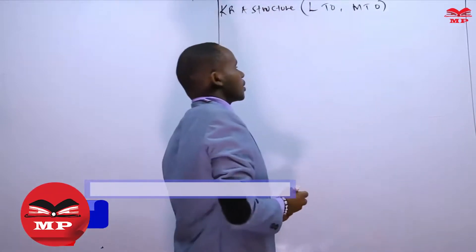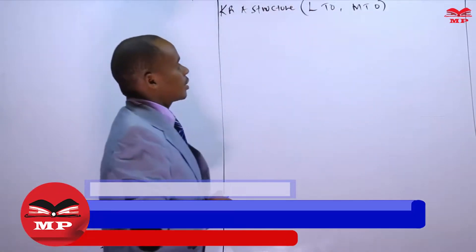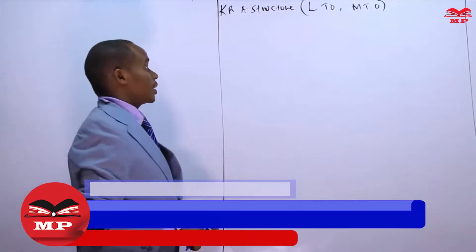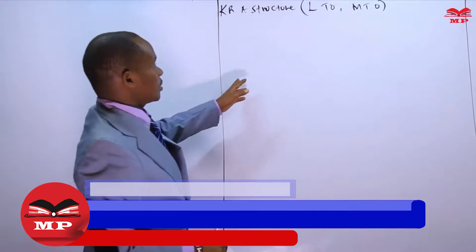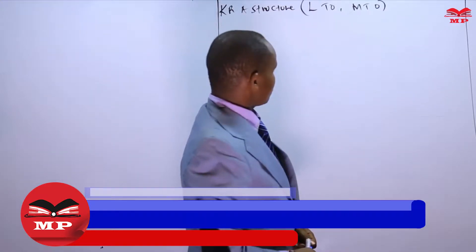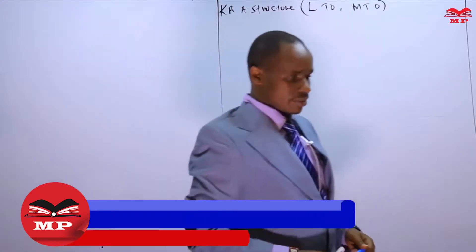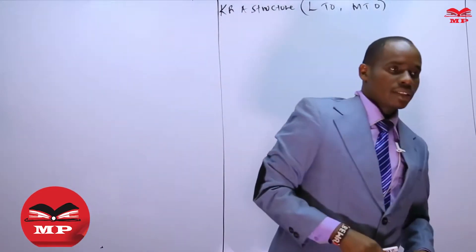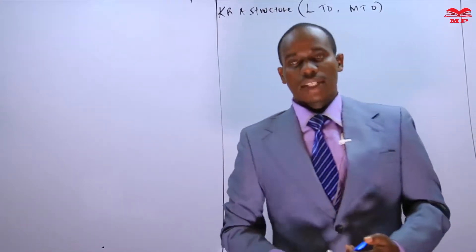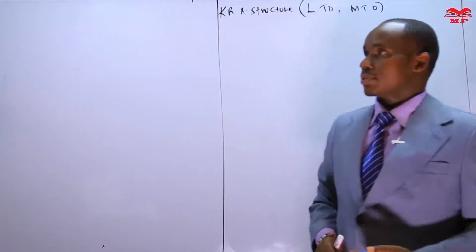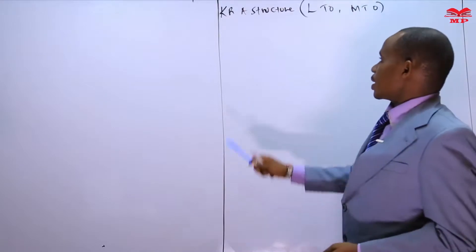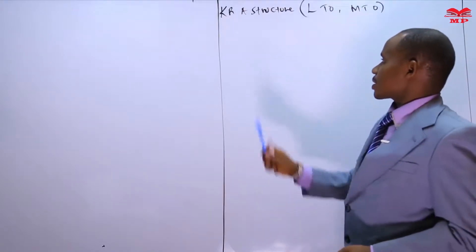By the end of this particular class, you need to understand what is meant by LTO and what is meant by MTO. At the same time, you need to have an overview of KRA structure.